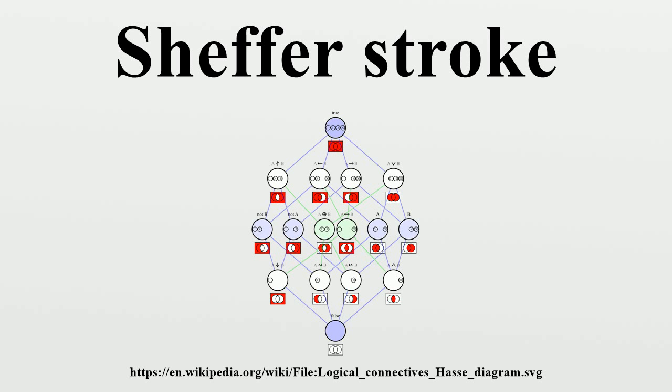Definition: The NAND operation is a logical operation on two logical values. It produces a value of true if, and only if, at least one of the propositions is false. Truth table: The truth table of A NAND B is as follows.